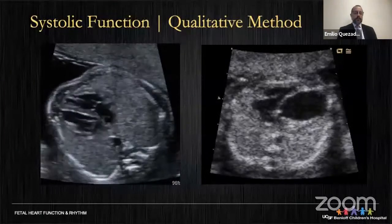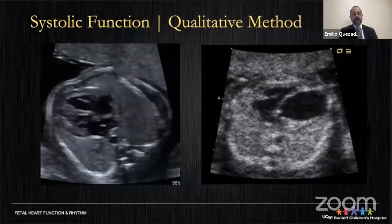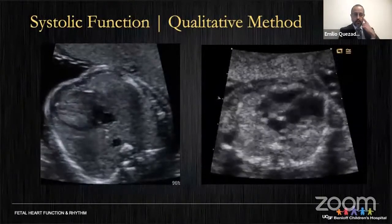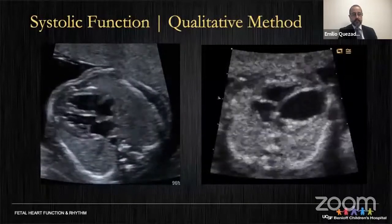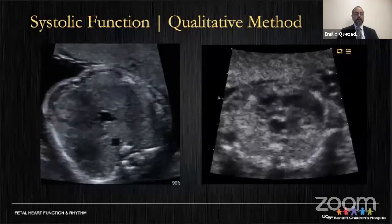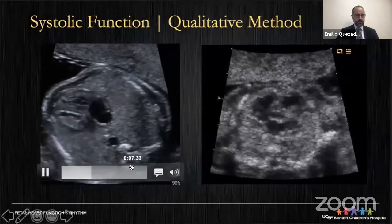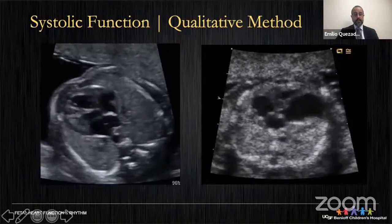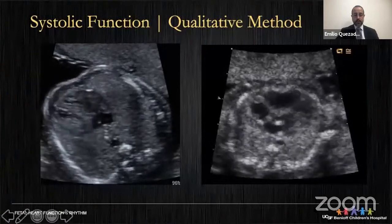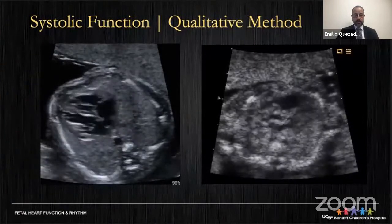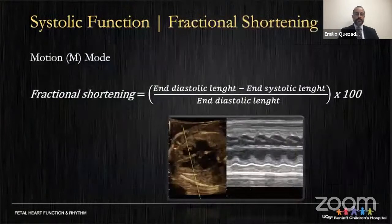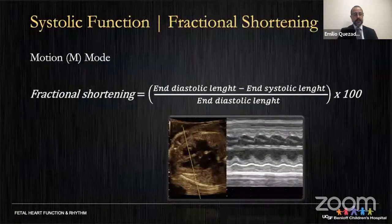In most routine fetal echocardiograms, we use the eyeball method — the 'ojímetro' — qualitatively assessing ventricular function. This is a very trustworthy method when function is clearly normal or clearly poor. When we're in the middle, that's when we need to start using quantitative methods.